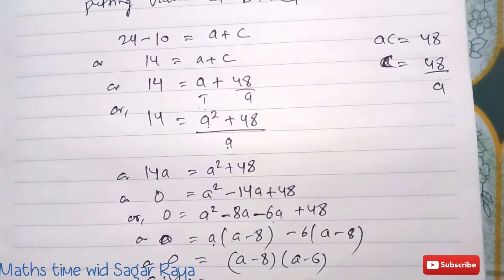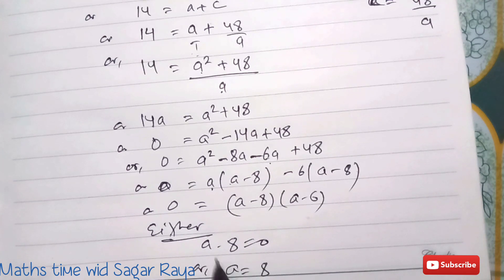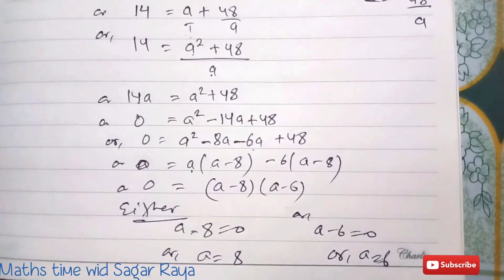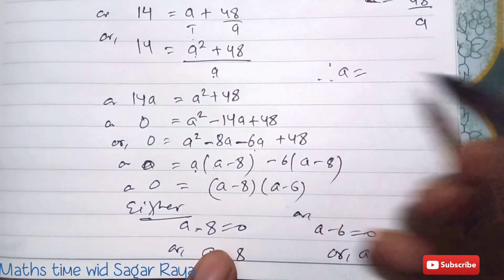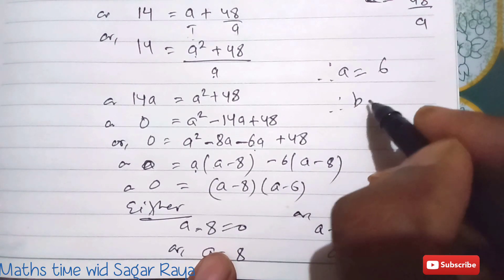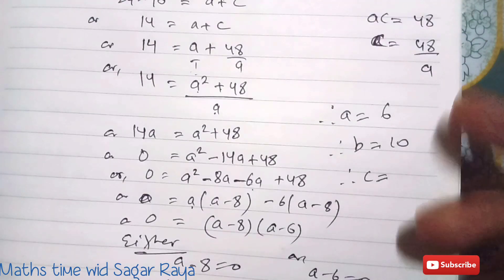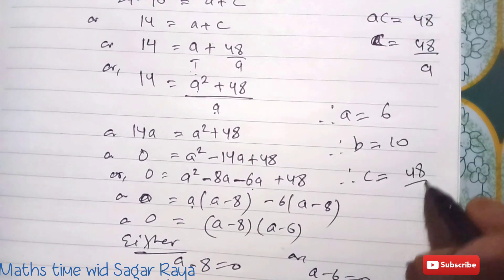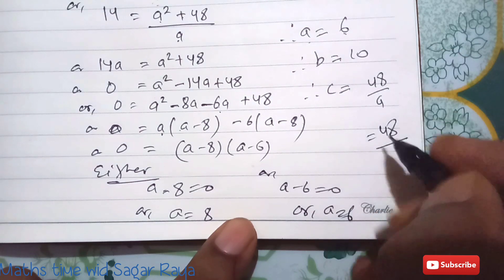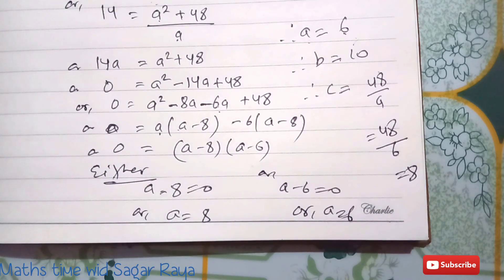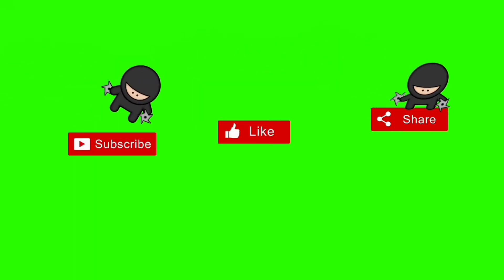Therefore a = 8 or a = 6. So the three sides are: a = 6, b = 10, and c = 48/a = 48/6 = 8. The three sides of the triangle are 6, 8, and 10. Please subscribe, like, and share my videos with your friends. See you soon with more educational videos — thank you!